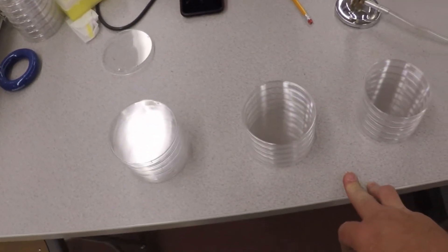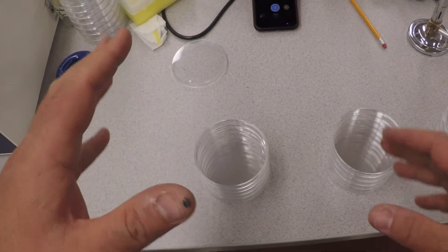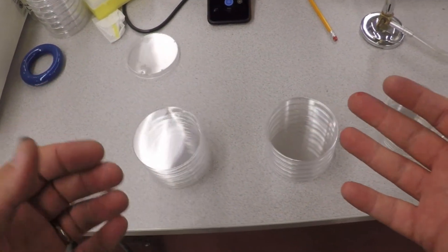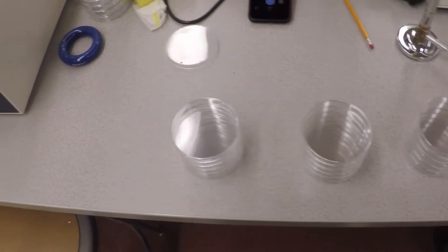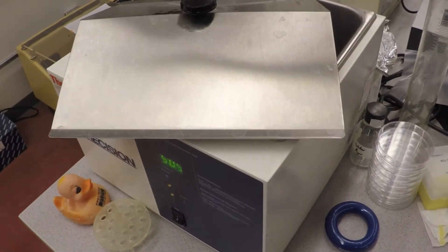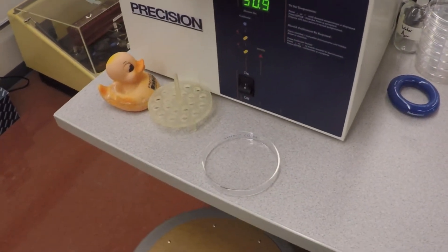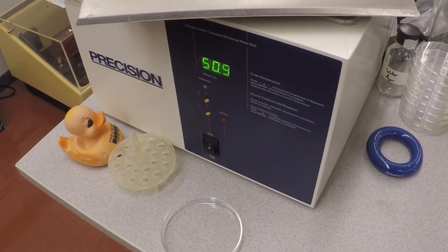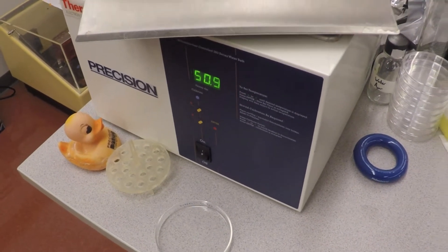Okay, as promised, we're going to pour some plates. I took the McConkey's agar out of the autoclave—it was very hot—and brought it over to this water bath. I set the water bath to about 50°C. Agar will solidify at about 48°C, so it's been sitting in here for a little while and now I can pick it up, which is handy.